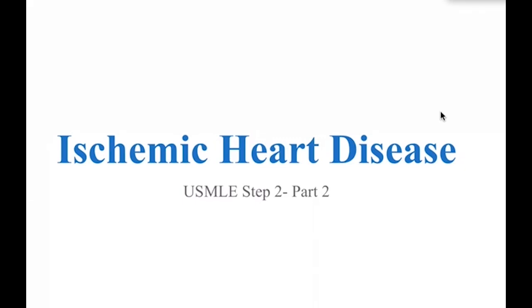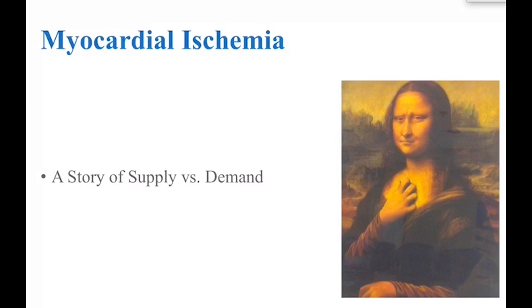The Mona Lisa from part 1 is making a presence again. Her image illustrates the symptomology of patients experiencing chest pain who may be having an ST elevation MI. You can see her grimacing with pain and putting her fist to her chest — a pathognomonic sign. These patients typically complain of an elephant sitting on their chest, a deep pressure lasting many minutes that can radiate to the arm, jaw, or shoulder.